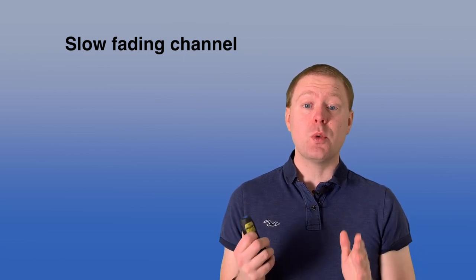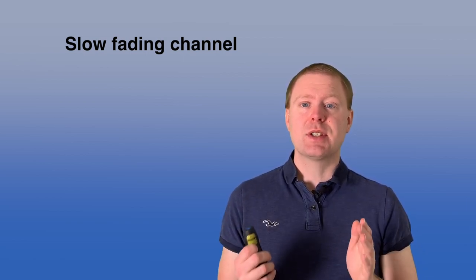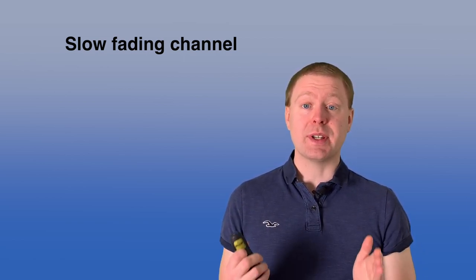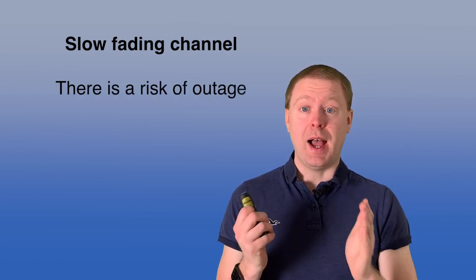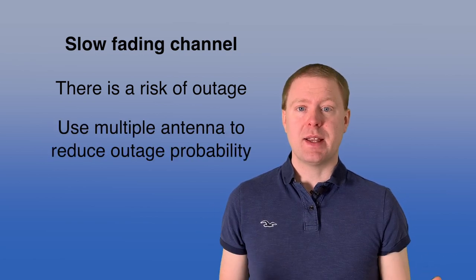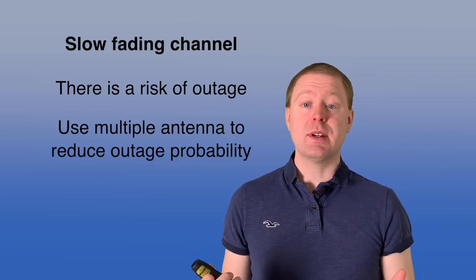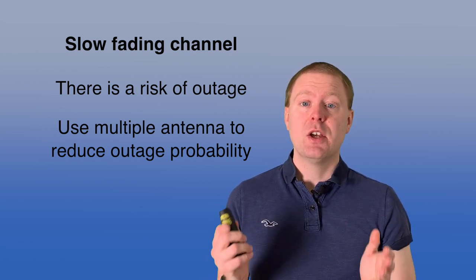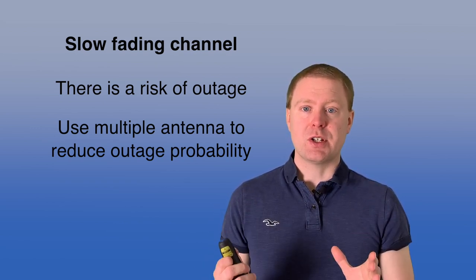So in summary, in the slow fading channel where the transmitter doesn't know the channel realization, it has to select an information rate to communicate. And there is a risk for outage that you're selecting a rate that is larger than the channel is supporting. But you can use multiple antennas either at the transmitter or at the receiver or actually on both, even if we didn't talk about that, to reduce the probability of outage. And that is called the diversity gain.